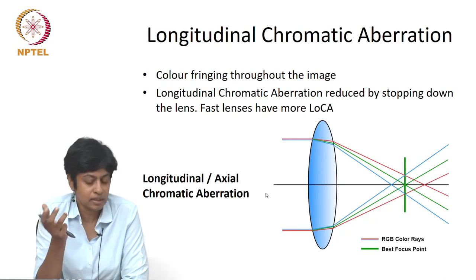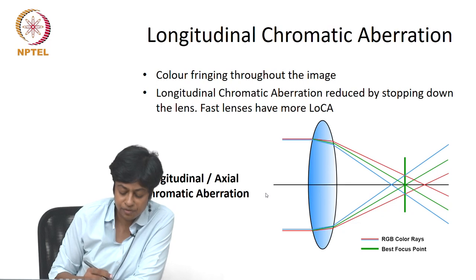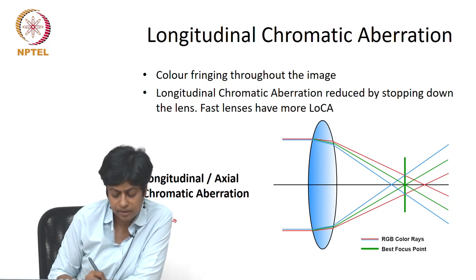We are going to extend the idea of how we can control or change aberrations, but before we do that we will start by looking at the remainder of the aberrations. Today's class we look very briefly at the chromatic aberrations. Chromatic aberration arises because the refractive index and the wavelength are related.